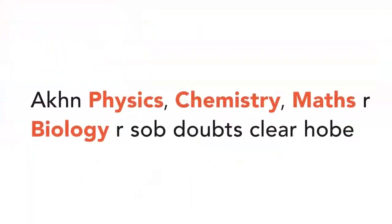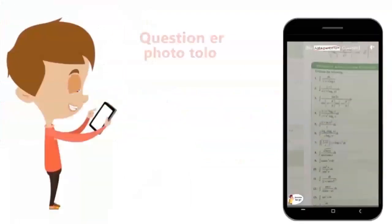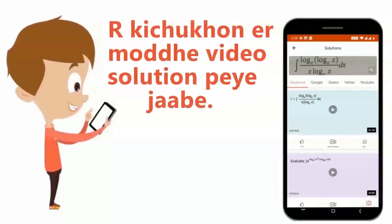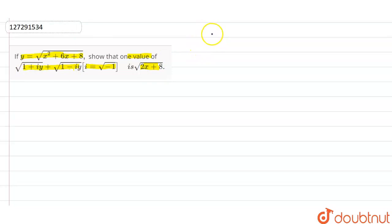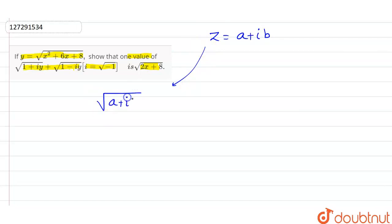Today's doubt class — download the app. In our session covering chemistry, physics, biology, and math, we will discuss iota, square root, and related concepts. We will show you a solution and demonstrate the key route and formula for this problem.